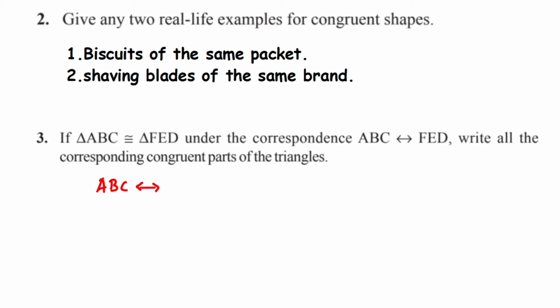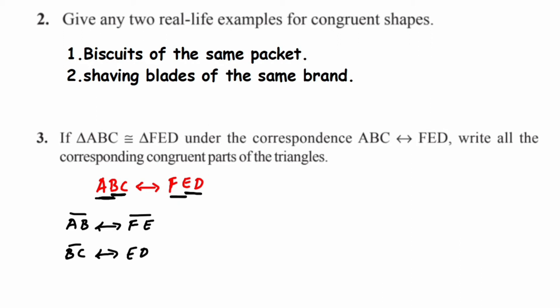Since they have given ABC and FED, the corresponding parts are clear if you follow the sequence. Vertex A corresponds to F, B to E, and C to D. So line segment AB is congruent to FE, line segment BC is congruent to ED, and line segment AC is congruent to FD.